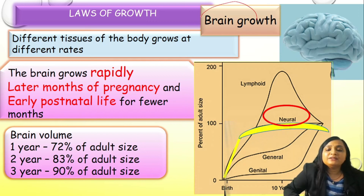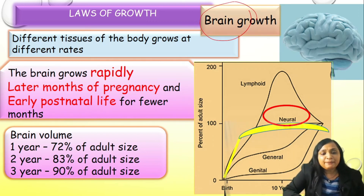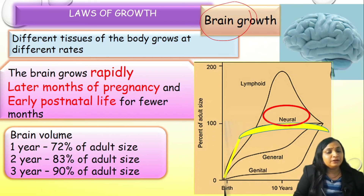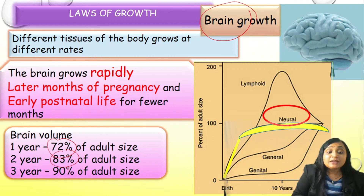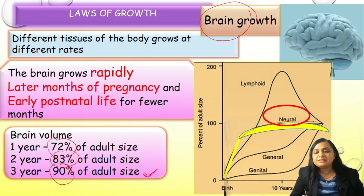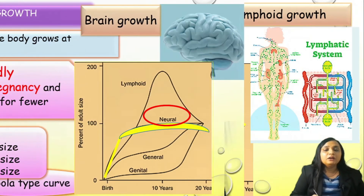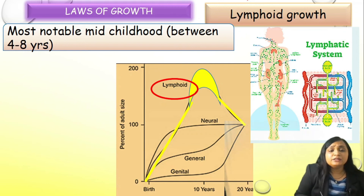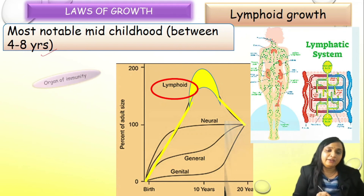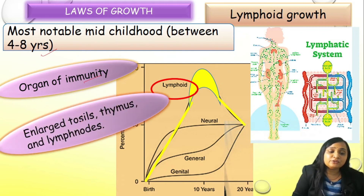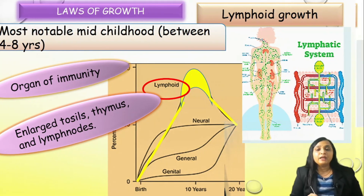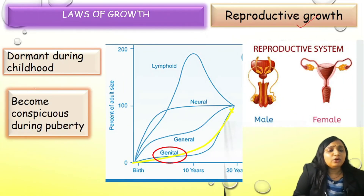Now let us learn about brain growth. The brain grows rapidly in the later months of pregnancy as well as early postnatal life. In the first year, 72% of adult brain size is achieved. In the second year, 83%, while 90% of the adult brain size is achieved by the third year of life. After that, brain growth is static. The third most important growth type is lymphoid growth — most notable between 4 to 8 years of life. It is an organ of immunity and is seen as enlargement of tonsils, thymus, and lymph nodes. Reproductive growth is dormant during childhood but becomes conspicuous during puberty.